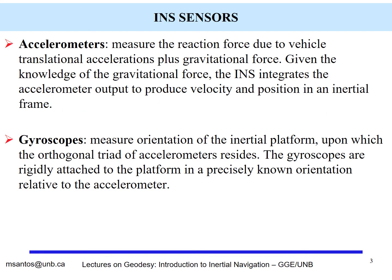As we have seen, the inertial navigation system sensors are the accelerometers and the gyroscopes. The accelerometers will give us translation acceleration plus gravitational force — we need to separate out just the actual acceleration of the vehicle. That acceleration can be integrated to produce velocity and position in the inertial frame. The gyroscopes will give us the orientation of the inertial platform.